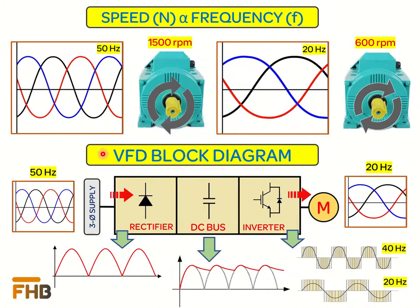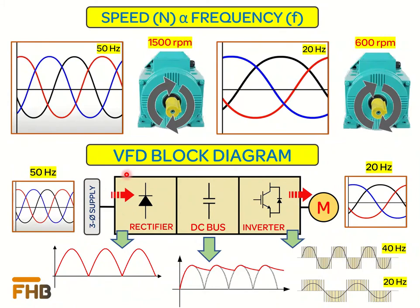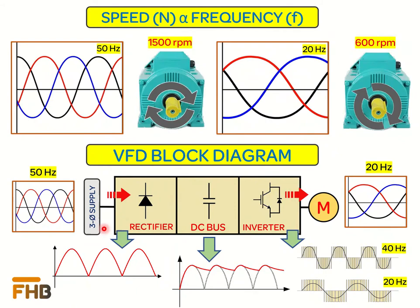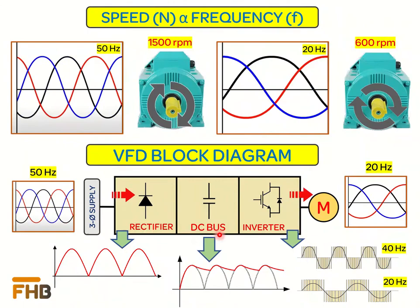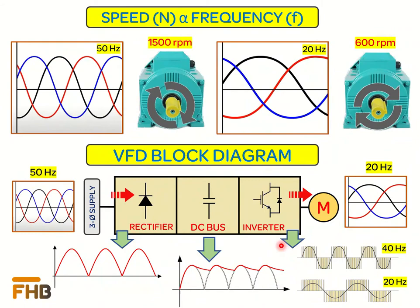We will now see how a variable frequency drive controls the frequency of the power supply. To control the frequency of the incoming waveform, the design of the VFD typically consists of three stages. The first stage is the rectifier, which uses diodes to convert the AC signal into a pulsating DC signal. In the second stage, ripples in the pulsating DC waveform are filtered using a capacitor, producing a relatively smooth DC signal.